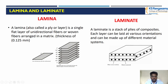Layer by layer is called a laminate. See the image: one lamina is at 0 degrees, another layer is at 45 degrees, and another lamina is at minus 45 degrees. Layer by layer at different angles — finally this stack is called a laminate. The laminate is a stack of plies of composite. Each layer can be oriented at various orientations and can be made up of different material systems.